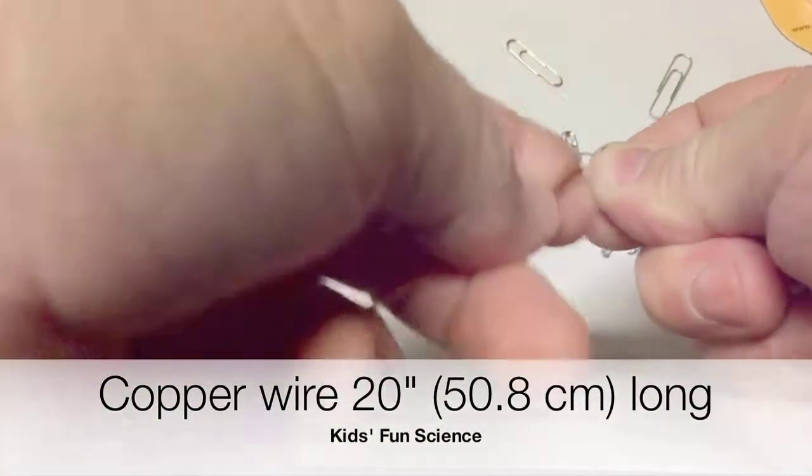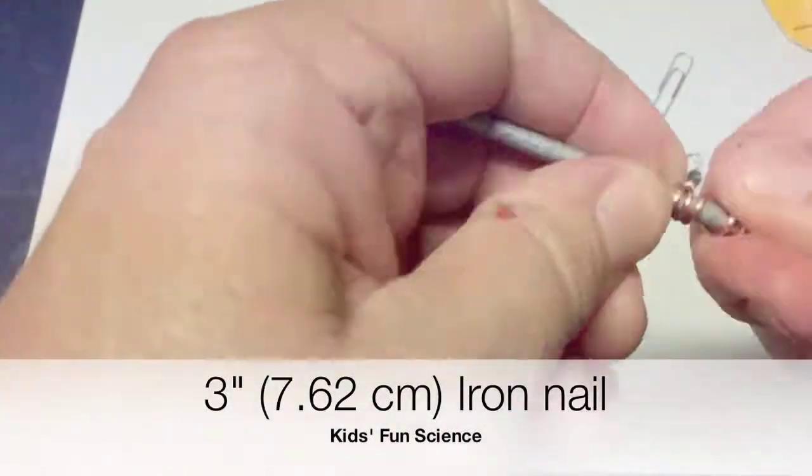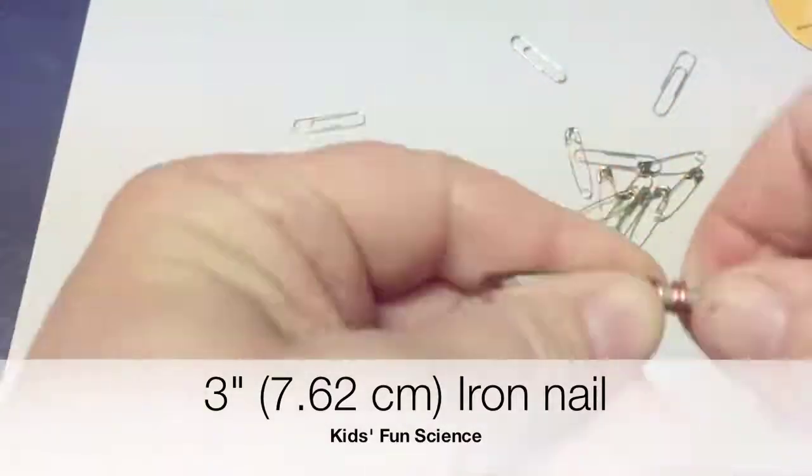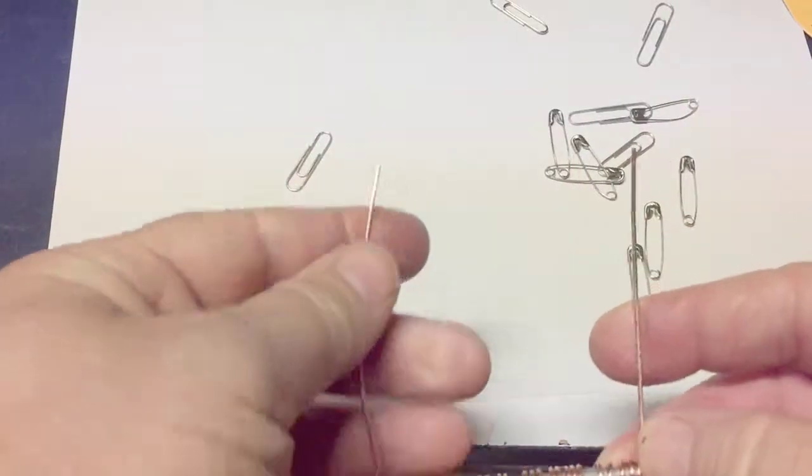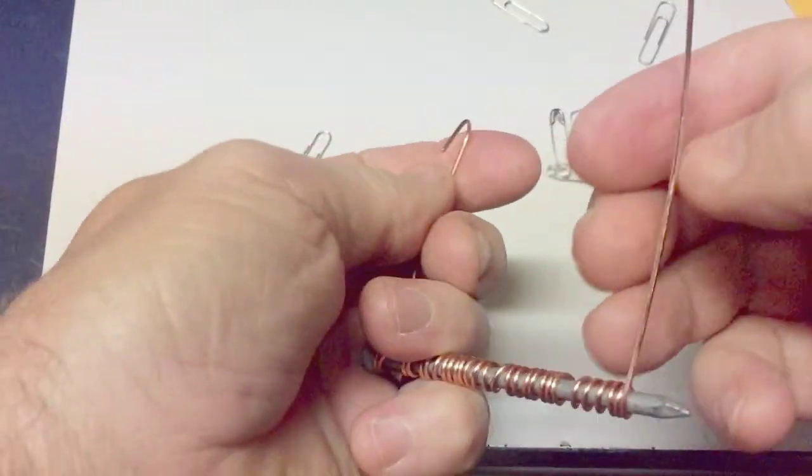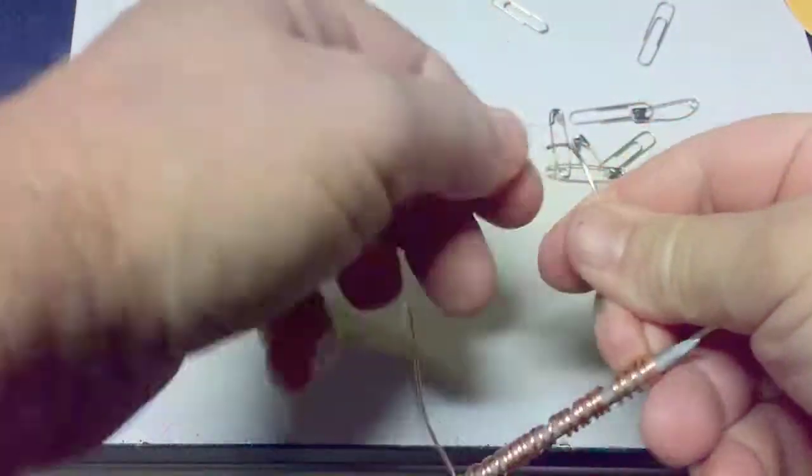Start on one end of the nail with your copper wire with about three inches sticking straight up, and then start winding it all the way down the nail so it kind of looks like a screw, tight as possible, until you get to the other end. Then you want the copper to have the same distance up, so clip off a little bit if it's too high.